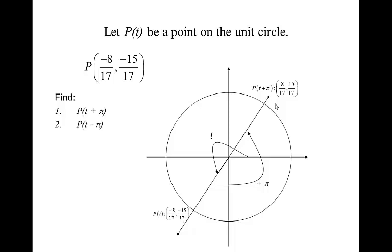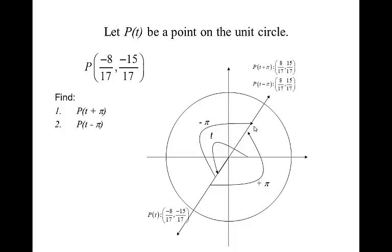Let's try P of T minus pi. From angle T, we're going to subtract pi. There's no difference between subtracting pi and adding pi — you end up in the exact same spot.